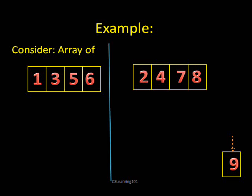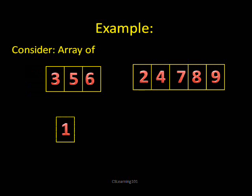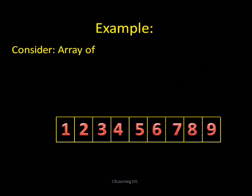Now we only have two lists left, but we want one large combined list with everything in it. We compare these two larger lists in the same manner. Comparing one and two — one is less than two, so one goes first. Then two, three, four, five, six, seven, eight, and nine. And that is your new sorted list obtained using merge sort.